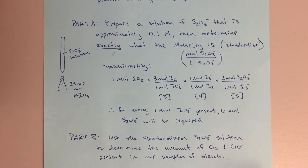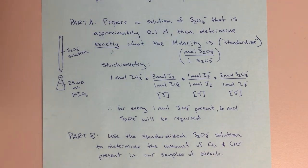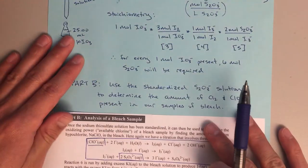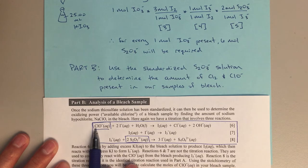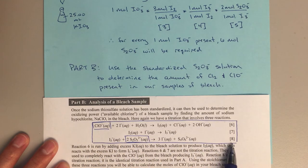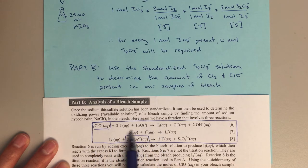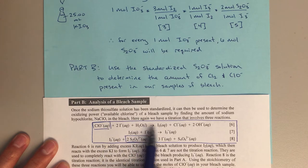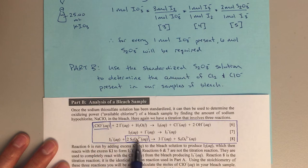Then in Part B, we're going to use the standardized thiosulfate solution prepared in Part A to determine the amount of Cl2 and ClO⁻ present in our samples of bleach. Looking at equations 6, 7, and 8 in Part B, we again find stoichiometric relationships: ClO⁻ to I2 is a 1-to-1 ratio, I2 to I3⁻ is a 1-to-1 ratio, and I3⁻ to S2O3 is a 1-to-2 ratio. Using all that stoichiometry, I can find the relationship between ClO⁻ and S2O3.